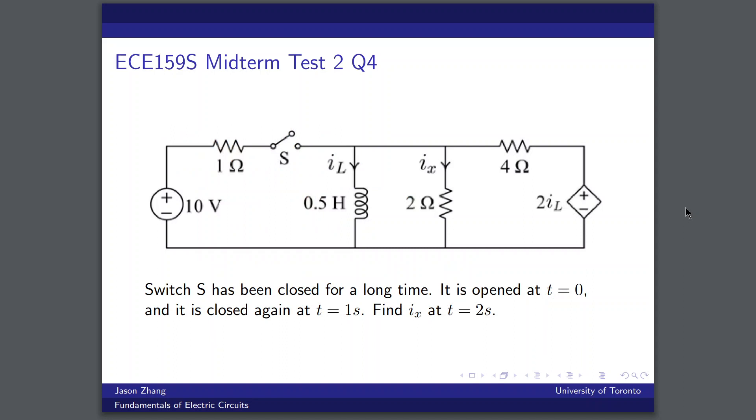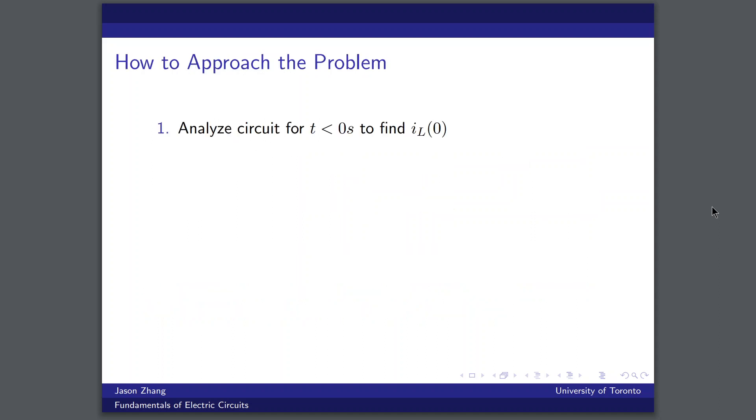So this is the question. It looks pretty short, but you'll see there are quite a few parts to it. And basically, what it's asking is given this circuit, we have a switch S, and it's been closed for a long time. At t equals zero, it's opened, and then it's closed again after one second at t equals one. Now we want to find I sub x, which is this current going through the two ohm resistor, and we want to find its value at t equals two seconds. So it seems like the question is quite simple, but actually there are many parts to it.